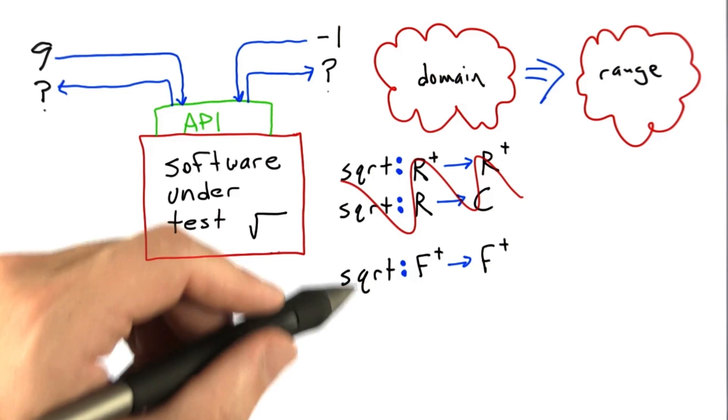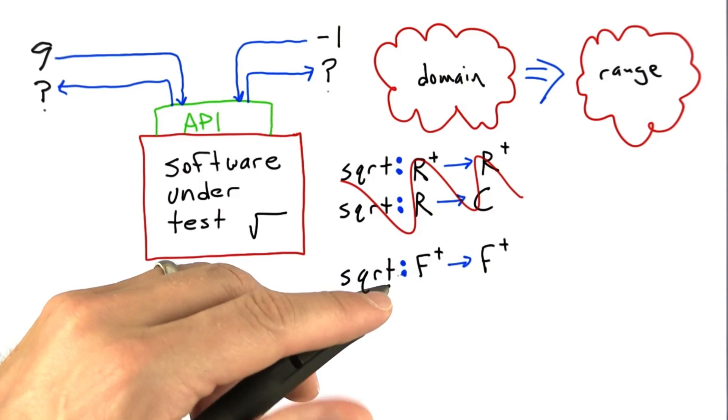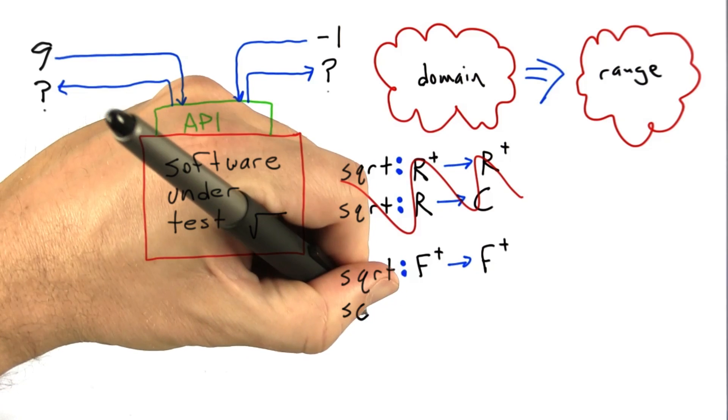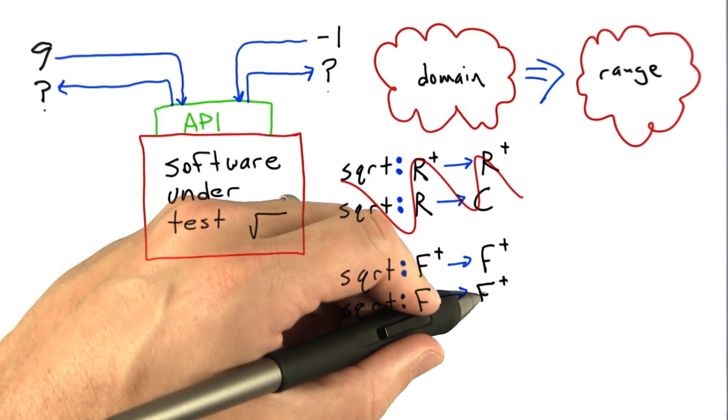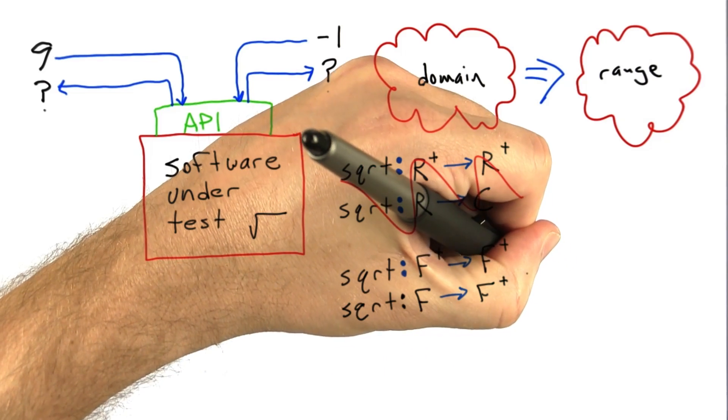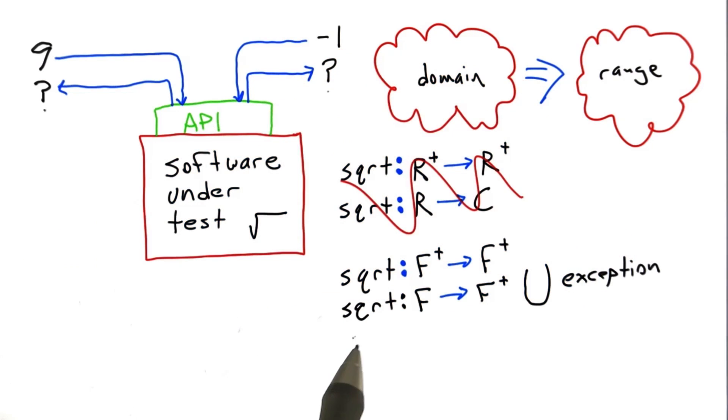This isn't very convenient. What should we do if somebody calls square root with a negative number? Languages like Python often declare square root over the full range of floating point numbers and give outputs that are positive floating point numbers unioned with a different behavior - throwing an exception. This bottom domain and range for floating point is the situation we get in many real programming languages.